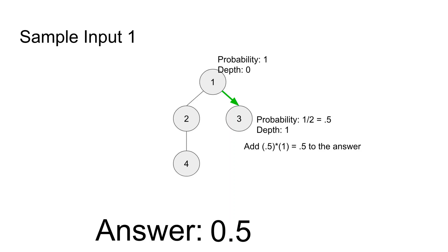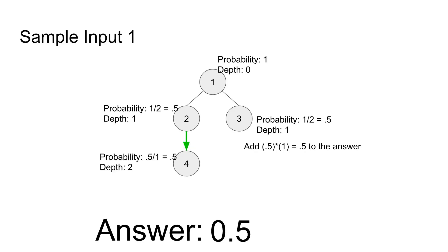Then we traverse to node 2. Since node 1 has two children, it splits its probability of 1 into two parts, so node 2 has probability 0.5 and depth 1. Node 2 then traverses to node 4. Since node 2 has only one child, its full probability of 0.5 transfers to node 4. Node 4's depth is 1 + 1 = 2. Node 4 has no children, so it's a leaf node. We add 0.5 × 2 = 1.0 to the answer, giving a total of 1.5, which is correct.